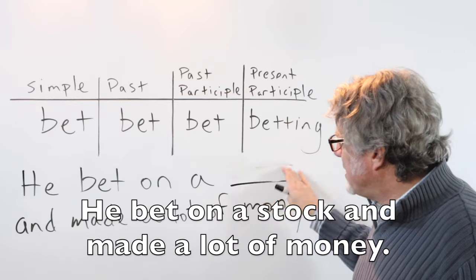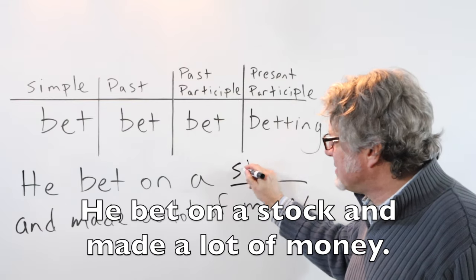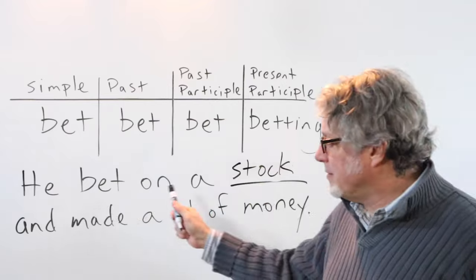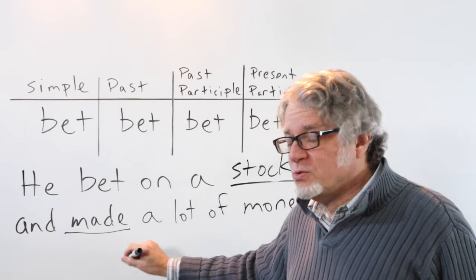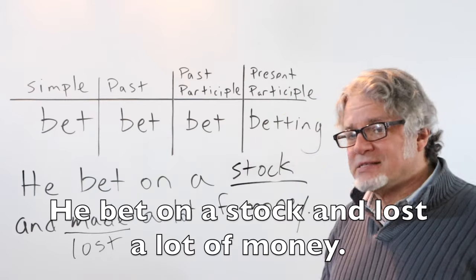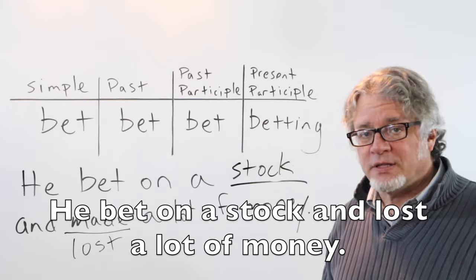If it's horse racing or the stock market, you'd say he bet on a stock and made a lot of money. This can change to lost. He bet on a stock and lost a lot of money.